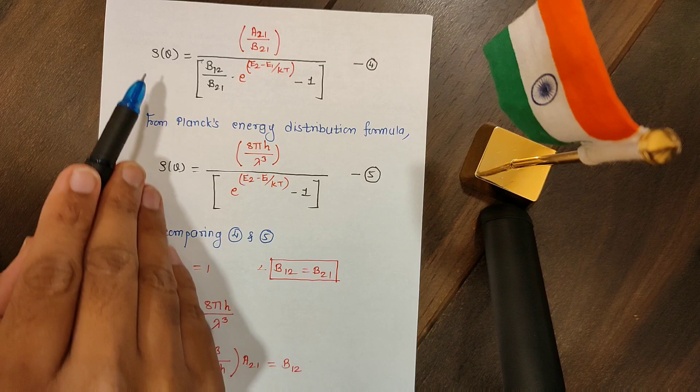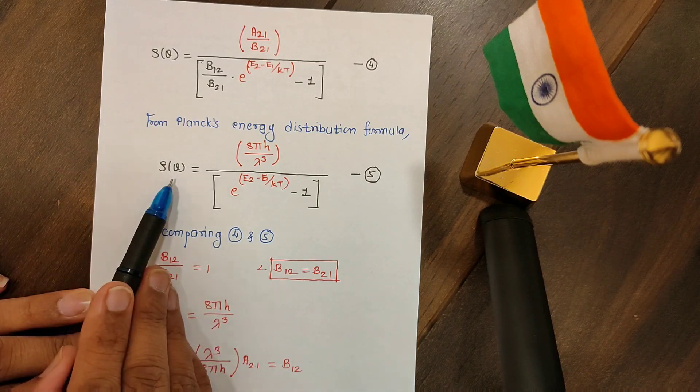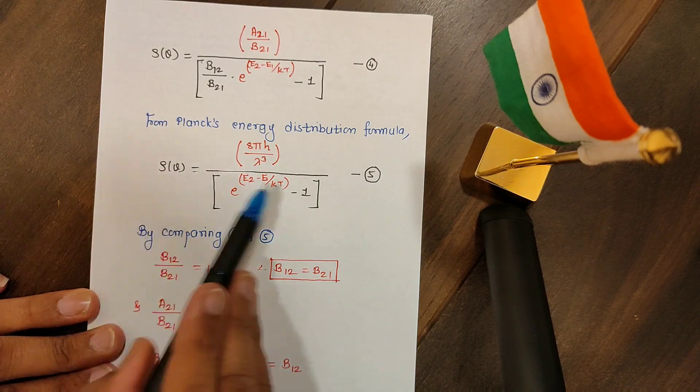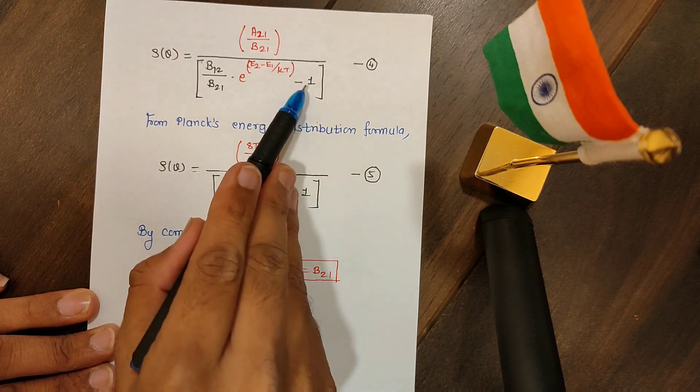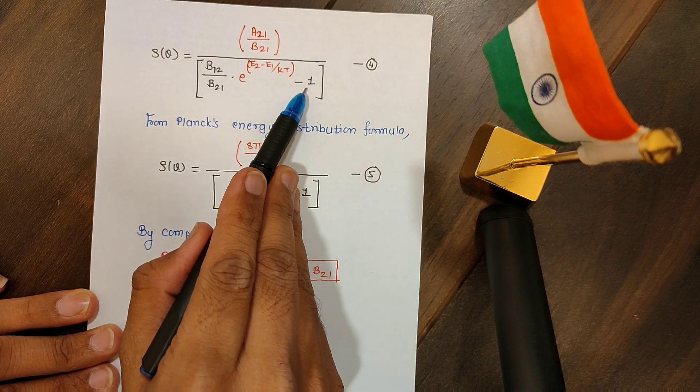Now my aim was to compare this equation with the Planck's distribution formula, in which we have 1 in this position. That is the reason I tried to bring 1 in the above equation.